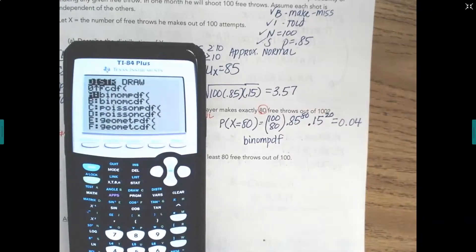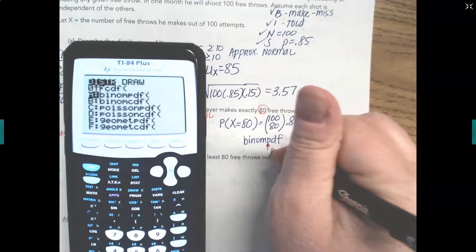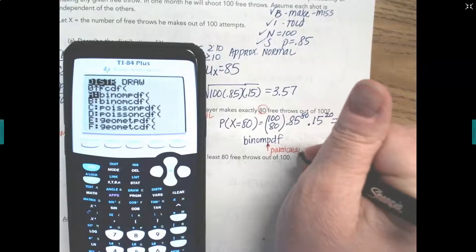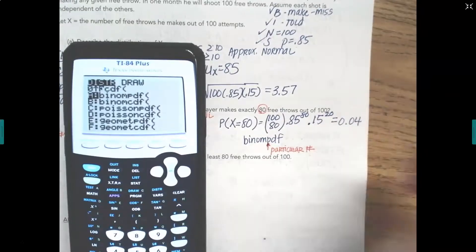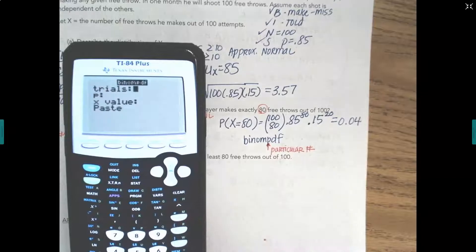And how I knew that I had to use the PDF versus the CDF, we're looking at a particular number. In this case, we're looking at 80. So that's why we want to use the Binomial PDF. It's only going to give me the probability for that number. Press enter.